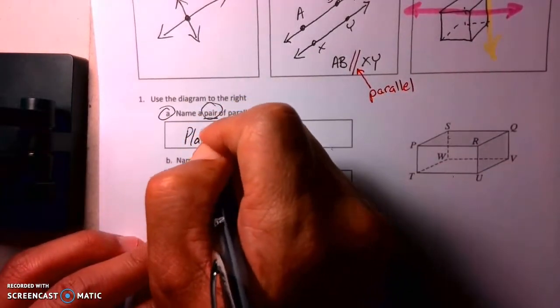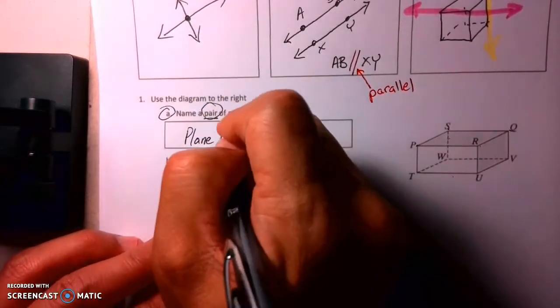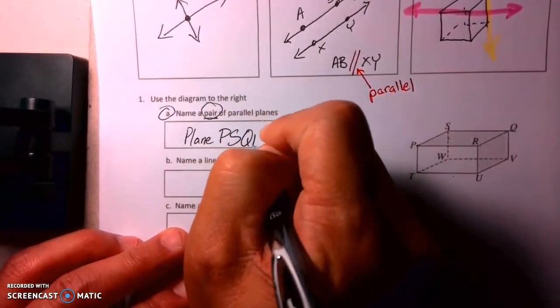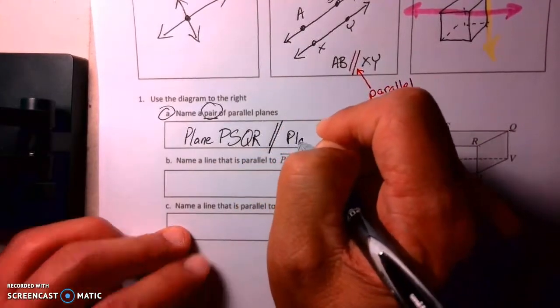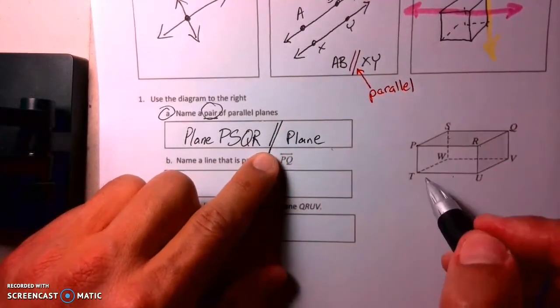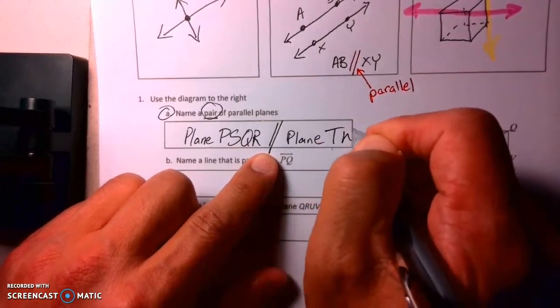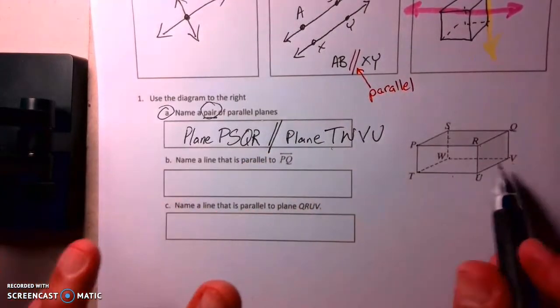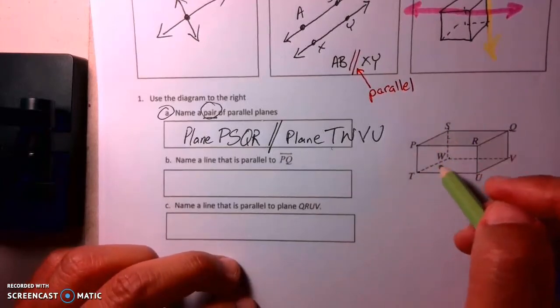So I'm going to say plane, the top one is PSQR. PSQR is parallel to plane - now again, that's the symbol for parallel - and the bottom one is TWVU, TWVU. Now those four letters could have been rearranged in different ways, but basically you're saying the top and then the bottom down here.